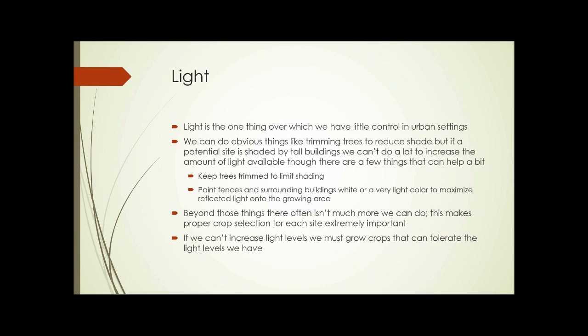Light is the one thing we have little control over in urban settings outdoors. We can do obvious things like trimming trees to reduce shade, but if a potential site is shaded by tall buildings we can't do a lot to increase the amount of light available, though there are a few things we can do that will help a bit.